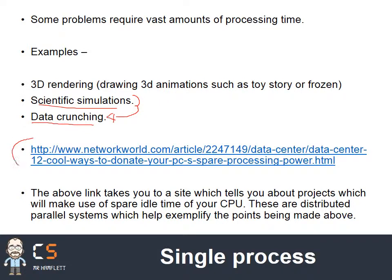There's a link here to 12 ways you can donate your spare processing time. I've included this because it gives clear examples of parallel processing — if I'm giving up part of my CPU time and you're giving up part of yours, along with thousands of other people doing the same thing, you're all working together to help solve a single problem. So we've got parallelism across many machines, and it's worth looking at those examples.